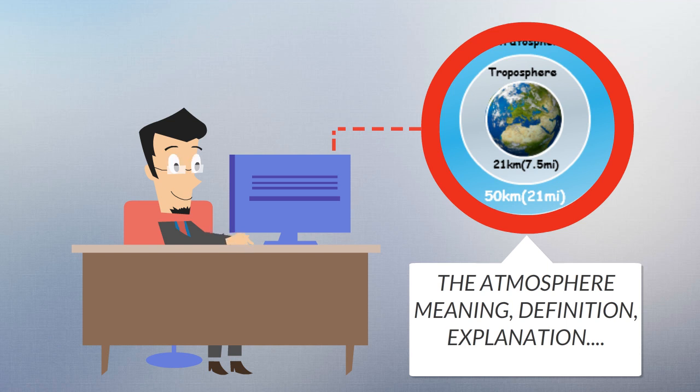The atmosphere of Earth is composed of nitrogen about 78%, oxygen about 21%, argon about 0.9%, with carbon dioxide and other gases in trace amounts. Oxygen is used by most organisms for respiration.